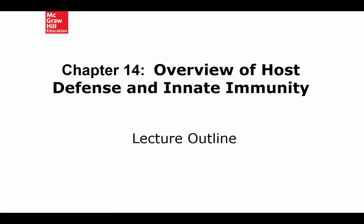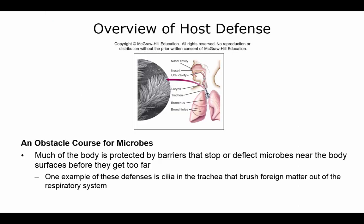In chapter 14 we're going to be looking at our defenses and our immunity. A lot of this will be review from 202 when we covered the immune and lymphatic system. First of all, we know that there is an obstacle course for the microbes because the body has protective barriers that will stop or deflect microbes near the body surfaces before they get too far. An example is the cilia in your trachea that sweeps upward to keep foreign matter from getting into your respiratory system.